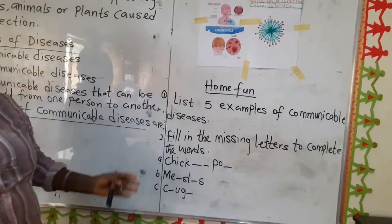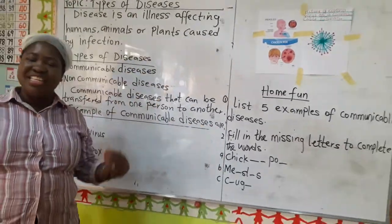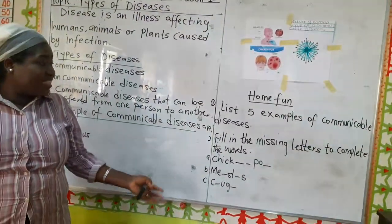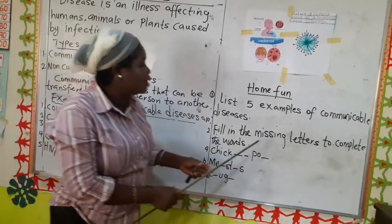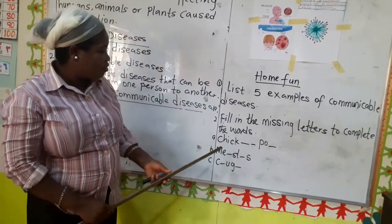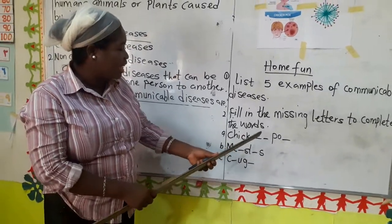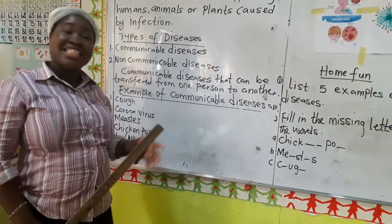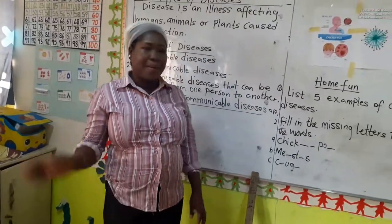When we resume back to school, you are going to list five examples of communicable diseases from the ones I've listed. You can ask your mummies and senior brothers and sisters at home to guide you. Number two, fill in the missing letters to complete the words using the notes I have given to you. See you in our next class — bye!